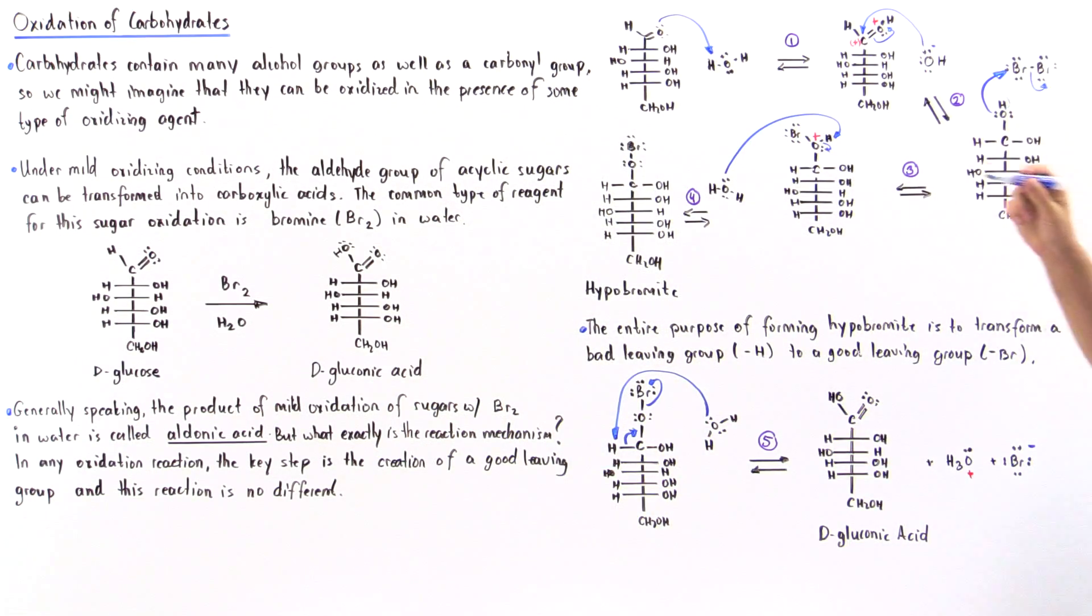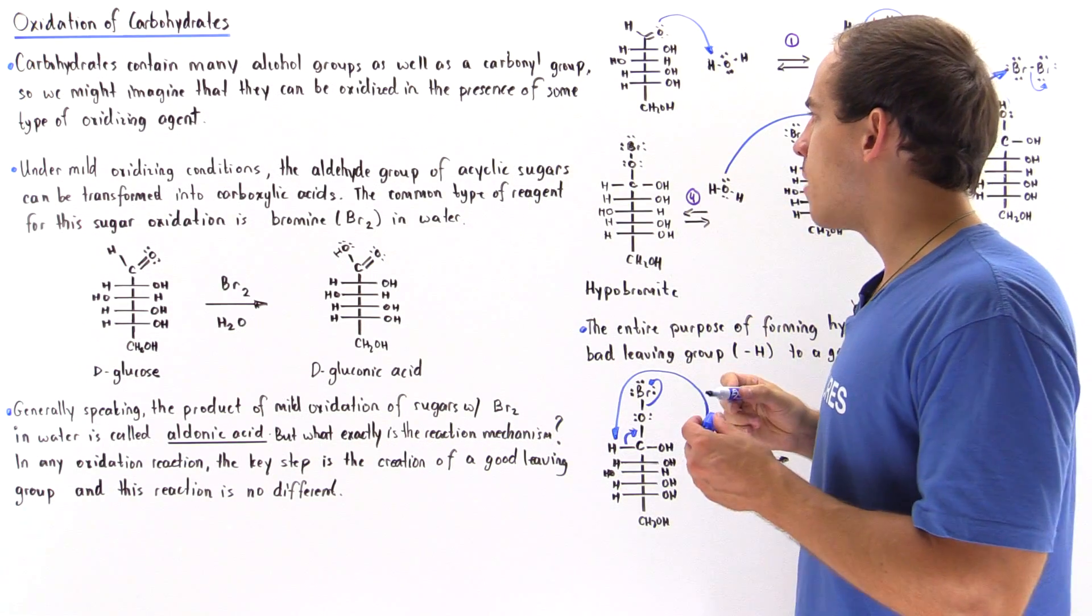This forms an intermediate known as the hypobromite. So the entire purpose of forming hypobromite is to transform a poor leaving group, this H, into a good leaving group, this bromide.